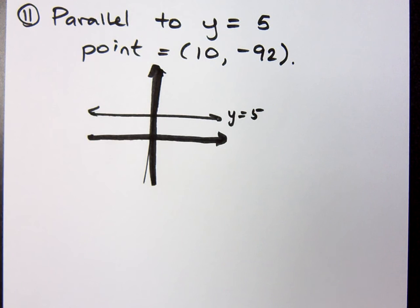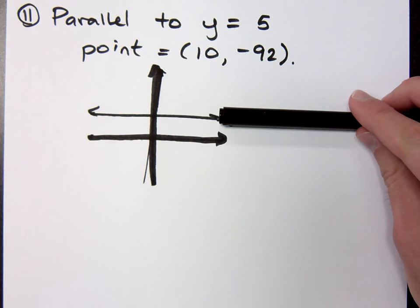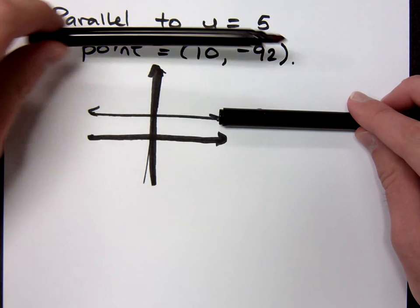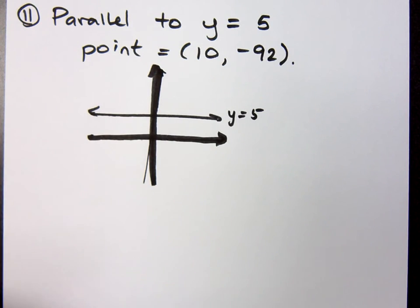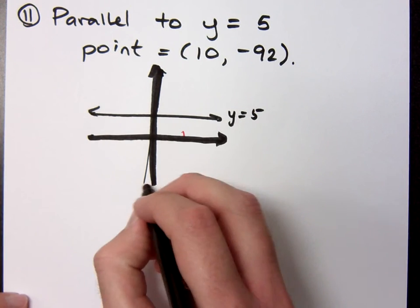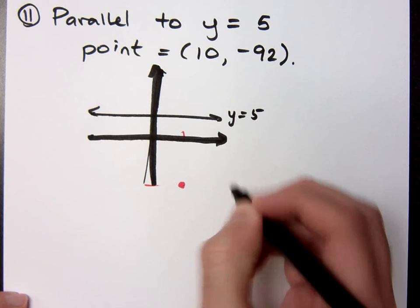If I say I want you guys to be parallel to a horizontal line, what do you look like? You look like another horizontal line, don't you? Yeah. Now, I want to go through the point 10, negative 92, which is going to be somewhere right here. Okay, it doesn't have to be exact. I don't really care.